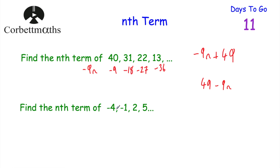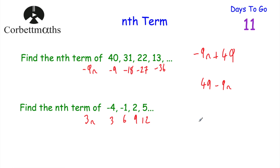Our next sequence goes negative 4, negative 1, 2, 5, and so on. We're going up 3 each time, so let's write our multiples of 3: 3, 6, 9, 12 — that's 3n. To get from 3 to minus 4 we take away 7, from 6 to minus 1 we take away 7, from 9 to 2 we take away 7, and so on. So the nth term is 3n minus 7. And if you got that, well done.